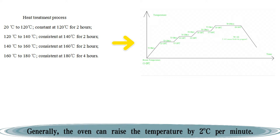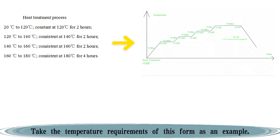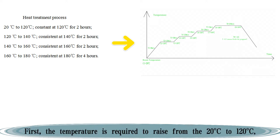Generally, the oven can raise the temperature by 2 degrees Celsius per minute. Take the temperature requirements of this form as an example. First, the temperature is required to raise from 20 degrees Celsius to 120 degrees Celsius.